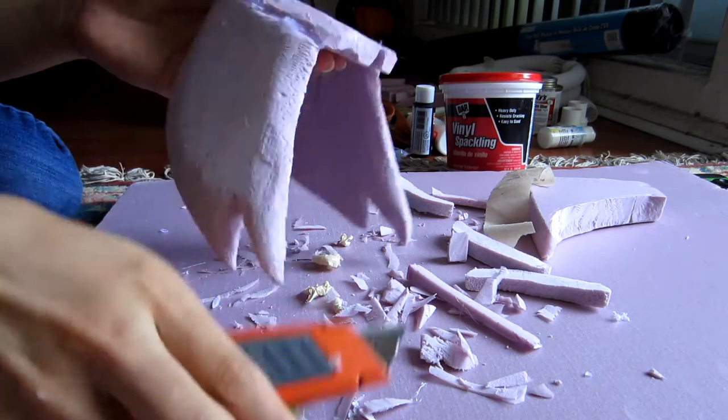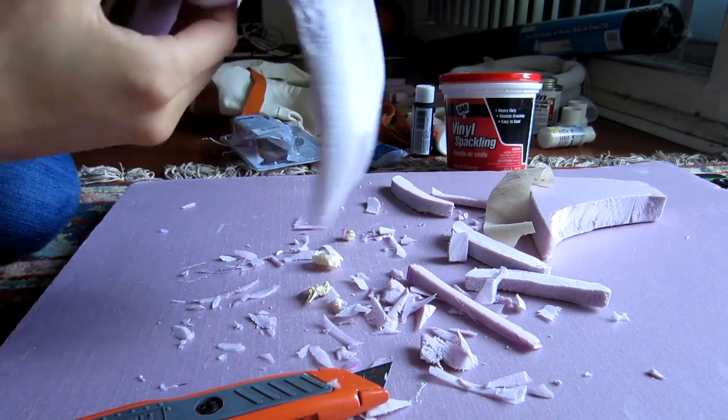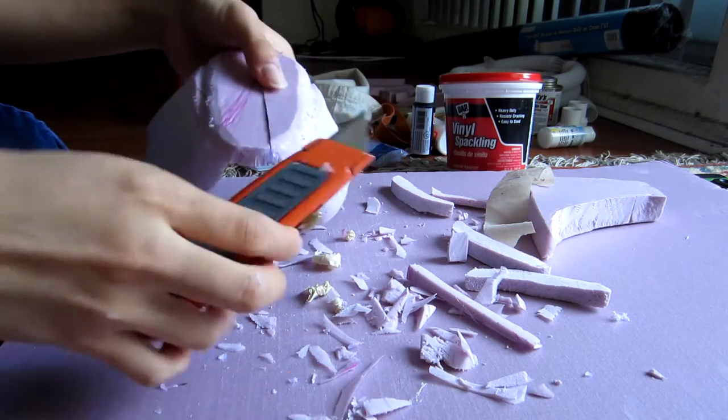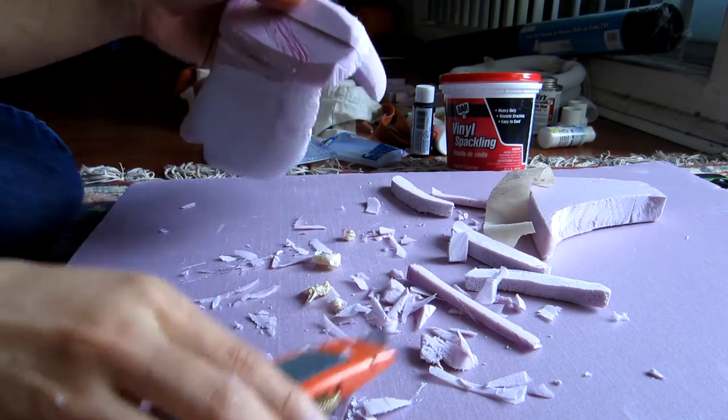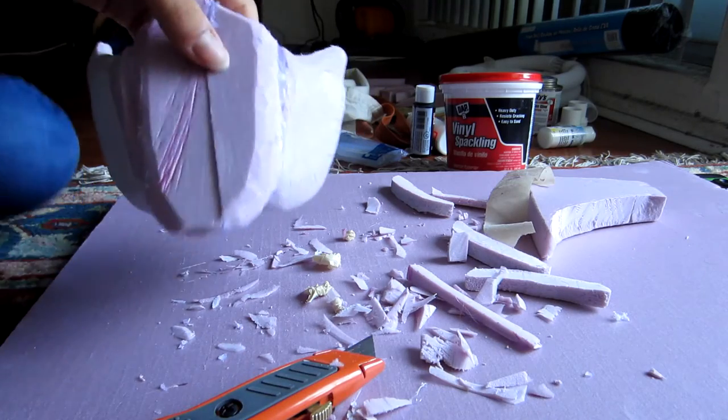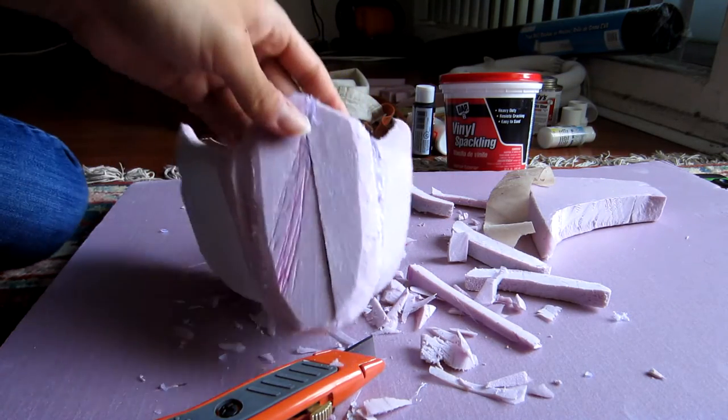So now once we have all these pieces put together, what we're going to do is start carving. Carving and sanding are going to be our best friends during this entire project. Because this is a mask, we're going to have to get all the angular features smoothed down way down.